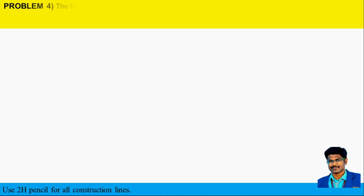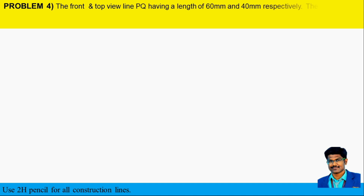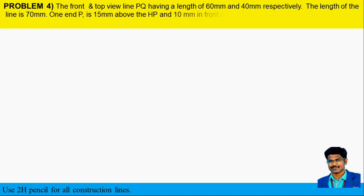The front and top view of the line PQ is having a length of 60 mm and 40 mm respectively. The true length of the line is 70 mm. One end P is 15 mm above the HP and 10 mm in front of the VP. Draw the projections and find the front view and top view angles.